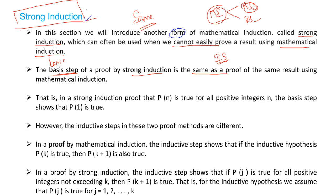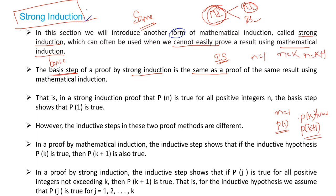In the Inductive Step of Mathematical Induction, we assume that P(K) is true, and then we prove that P(K+1) is true. We are not concerned about the second, third, or fourth steps — we directly assume P(K) is true and prove P(K+1) is true. That is the Inductive Step in Mathematical Induction.